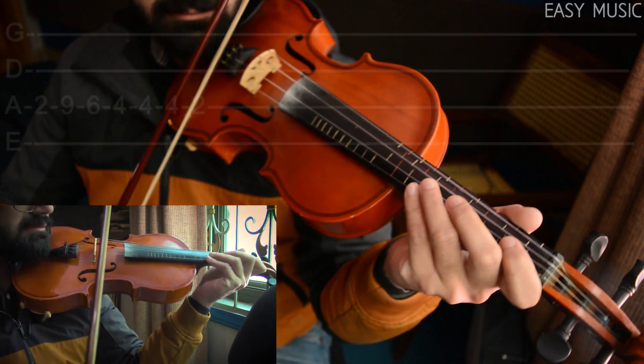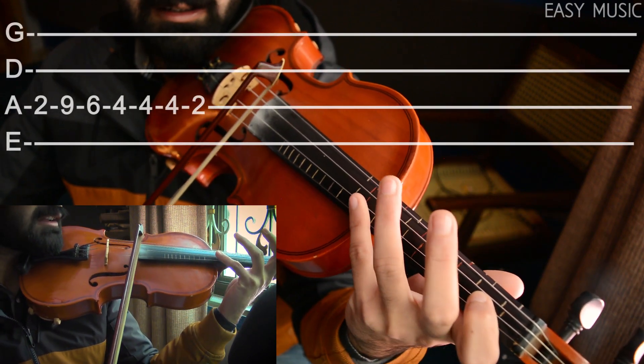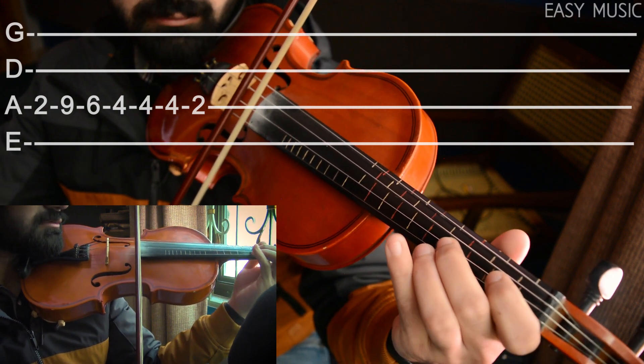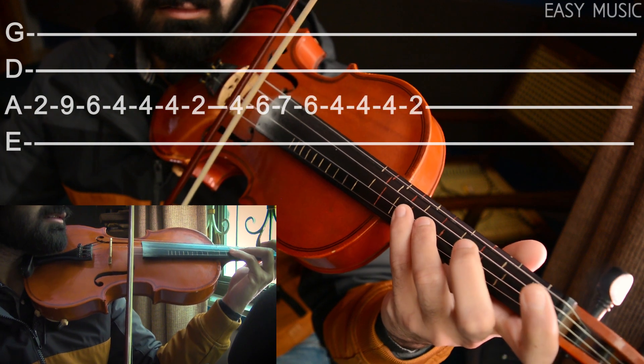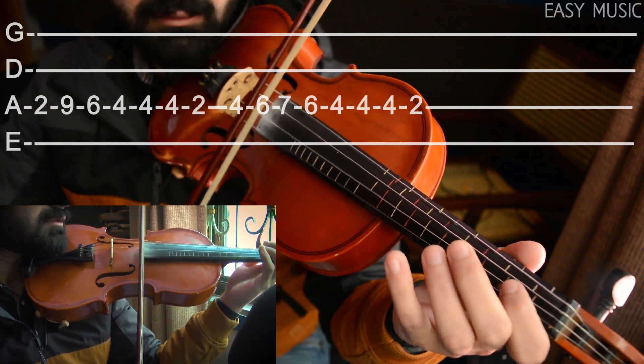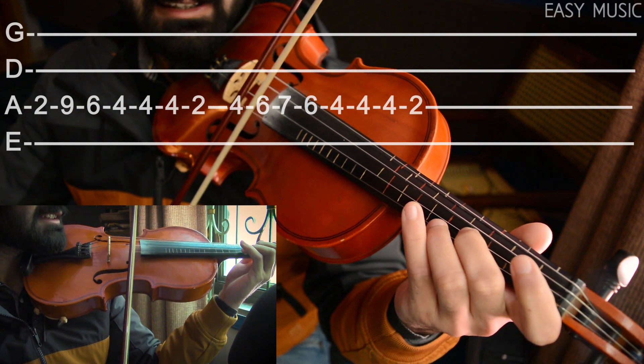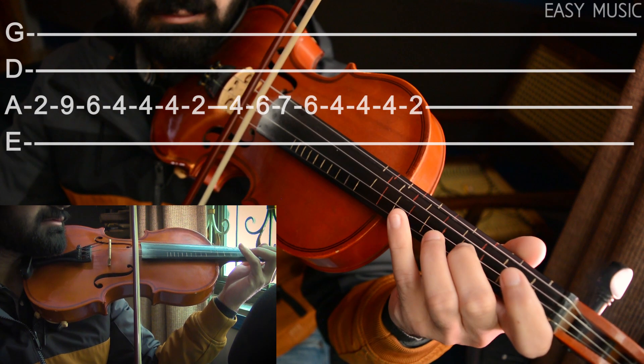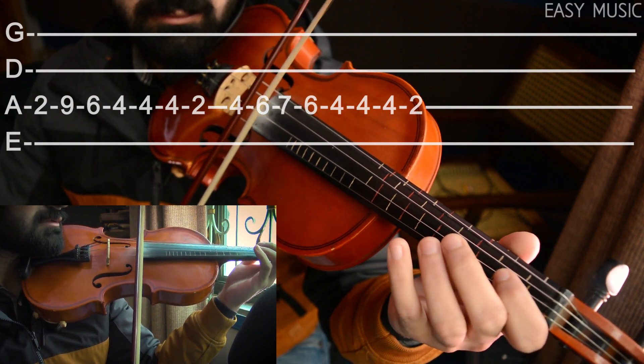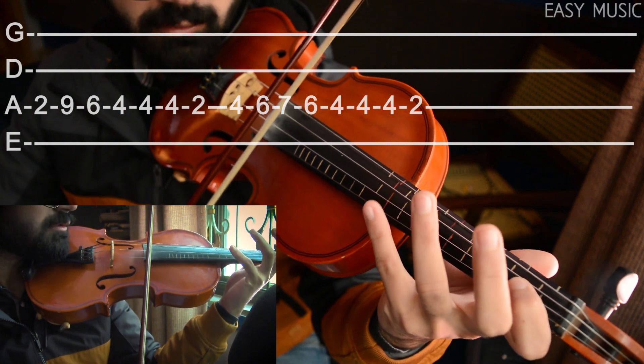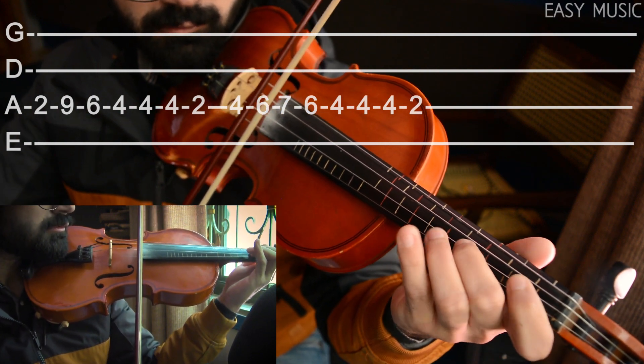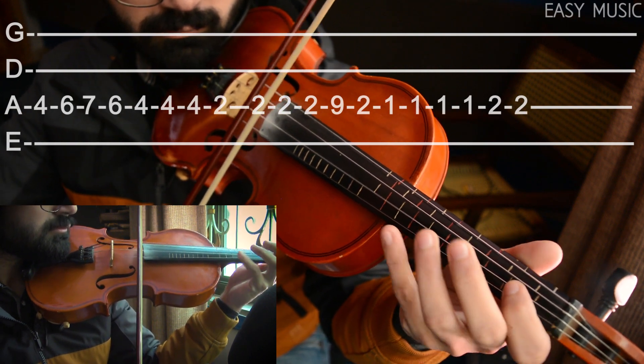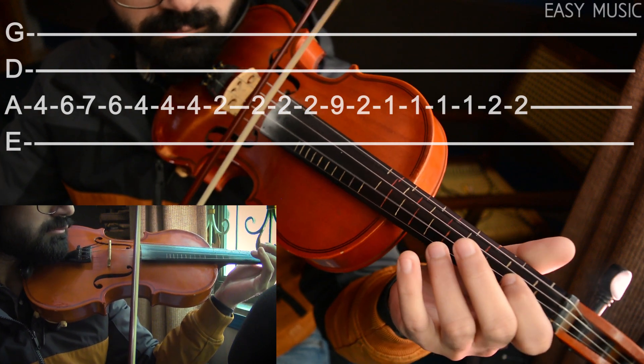So how you can play this one is, 2nd fret, 9th, 6th, 4th, 2nd, and then how you gonna do this one is, 4th, 6th, 7th, 6th, 4th, and then 2nd, so total will be... again the same.